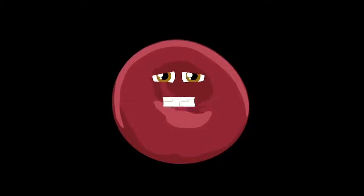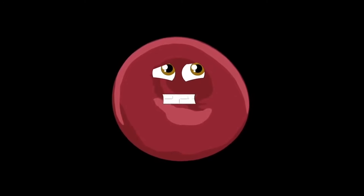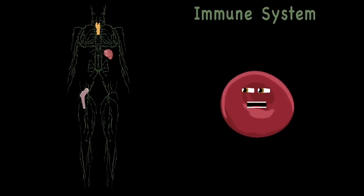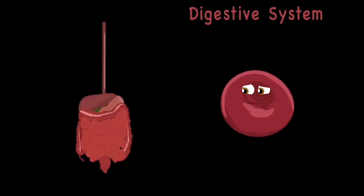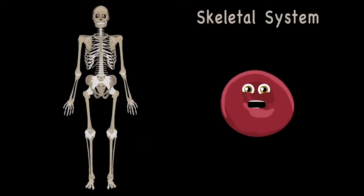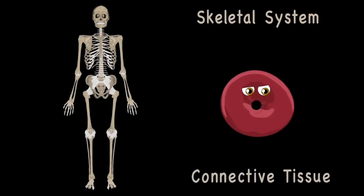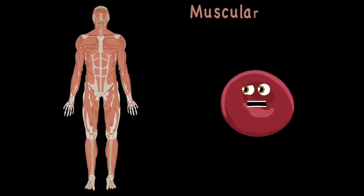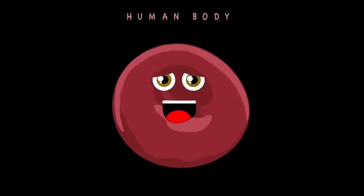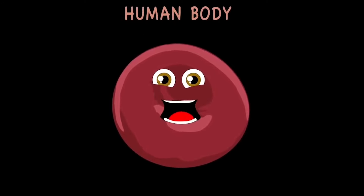Your immune system fights off a lot of disease — it detects when you're sick then makes you feel healthy. The digestive system takes all the food that you eat, then extracts the vitamins and nutrients that you need. Your skeletal system is made up of bones held together by connective tissue so they don't roam. The muscular system has three types: skeletal, smooth, and cardiac make up the three.